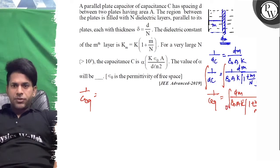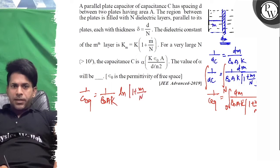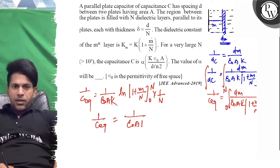What will come? Its limit is 0 to N. So this will give you 1 upon ε₀AK ln(1 + m/N) limit 0 to N into 1/N. So this gives 1 upon C_equivalent equals 1 upon ε₀AK into ln 2.